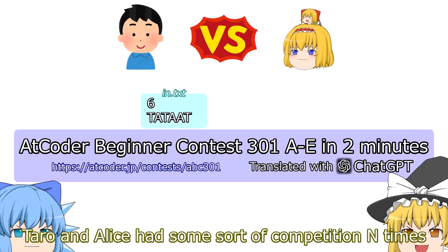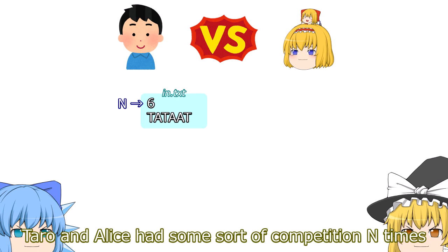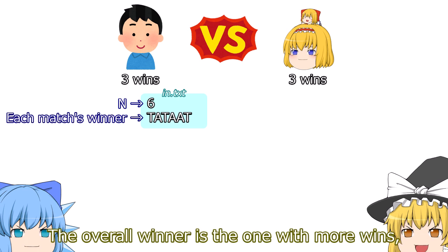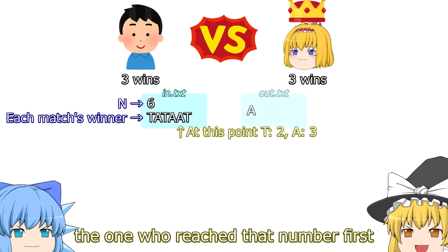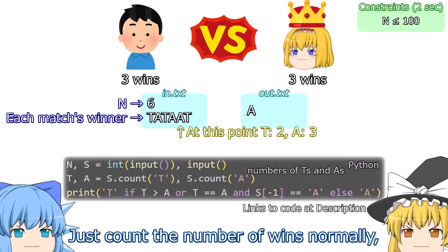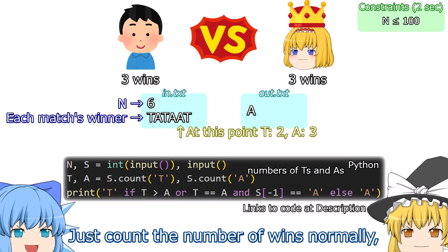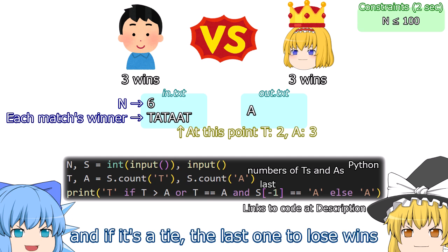Problem A: Taro and Alice had some sort of competition n times. The overall winner is the one with more wins, or if they have the same number of wins, the one who reached that number first. Just count the number of wins normally, and if it's a tie, the last one to lose wins.